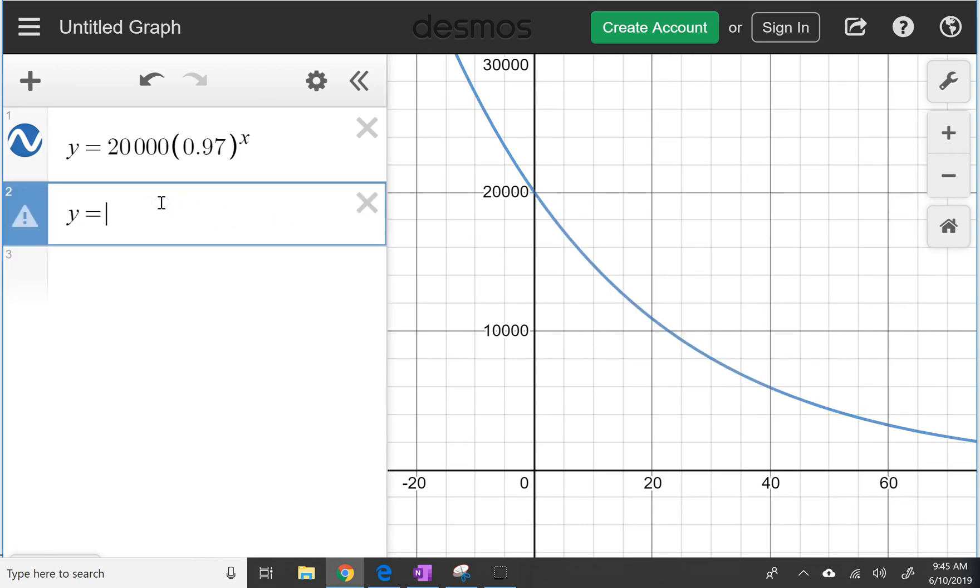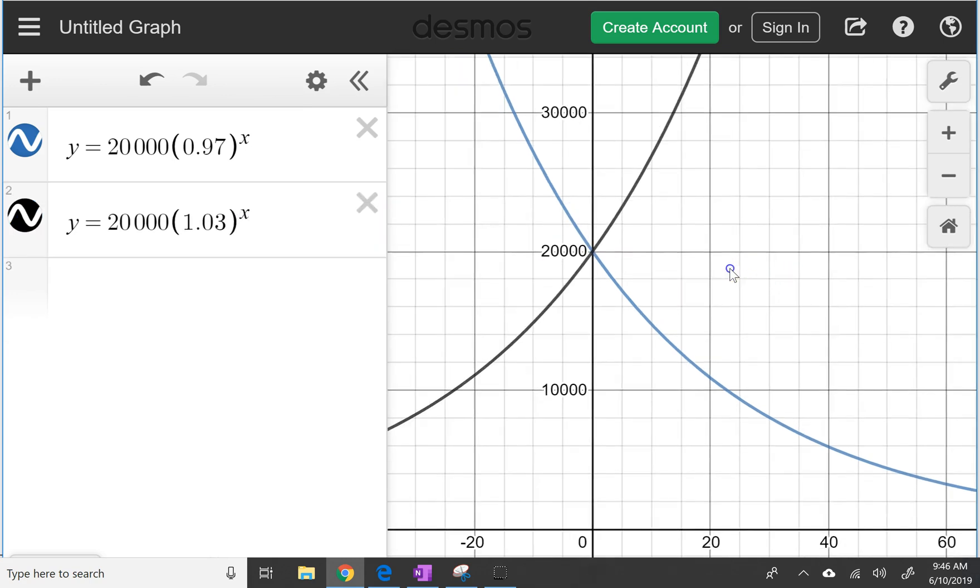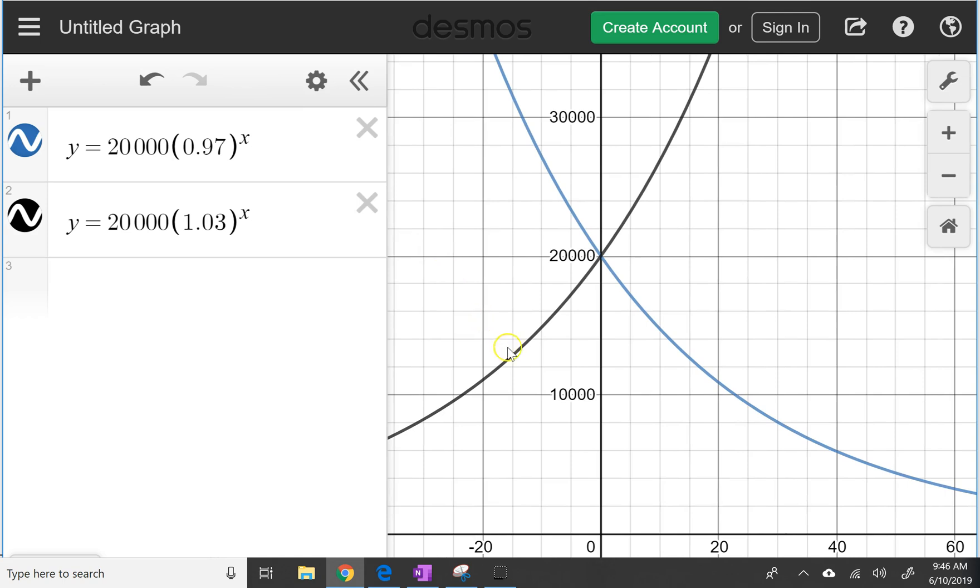And so let's compare that to the bank account where it was appreciating, where we had the 1.03 to the X power. So you can see there's a relationship between these two. The one is increasing exponentially, the other is decreasing exponentially, and so the graphs are kind of reflections of each other over the y-axis, which is just interesting. And you can see they have the same y-intercept.